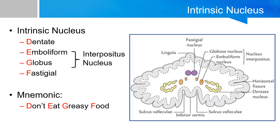The emboliform and globus nuclei are usually grouped together because they serve essentially the same function, and they are collectively called the interpositus nucleus. They sit deep to the intermediate zone of the cerebellum. The fastigial nucleus is the most medial structure and lies under the midline roof of the fourth ventricle, deep to the vermis.